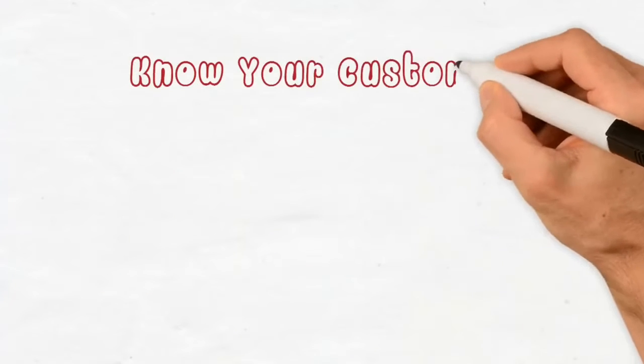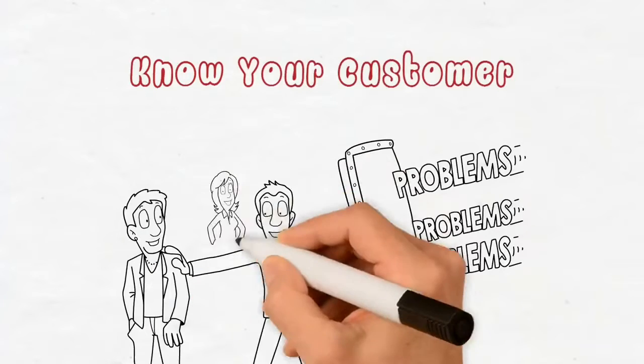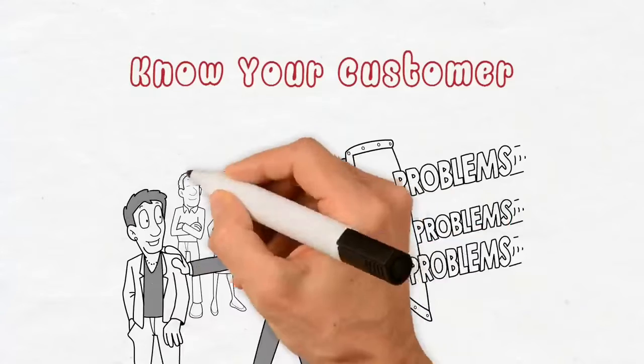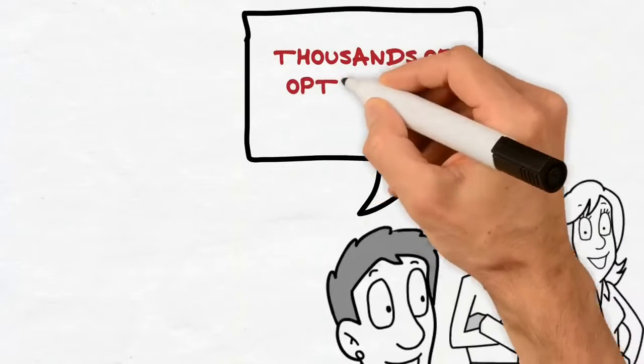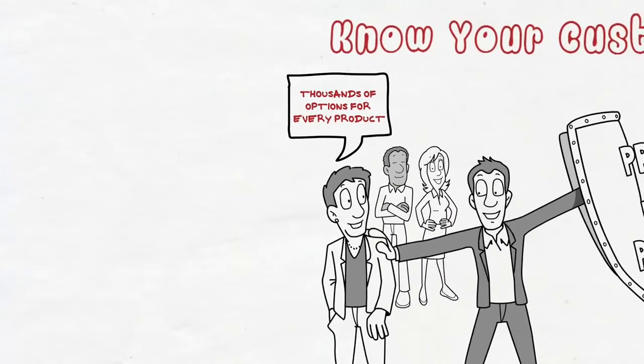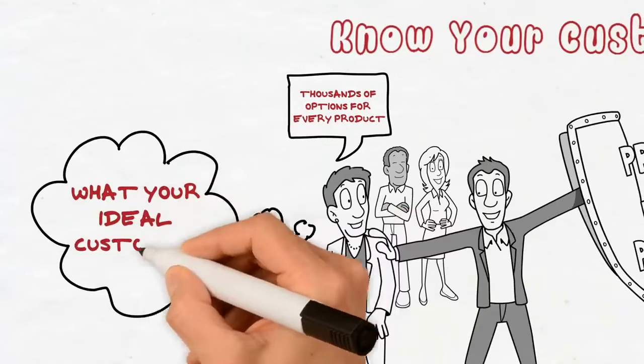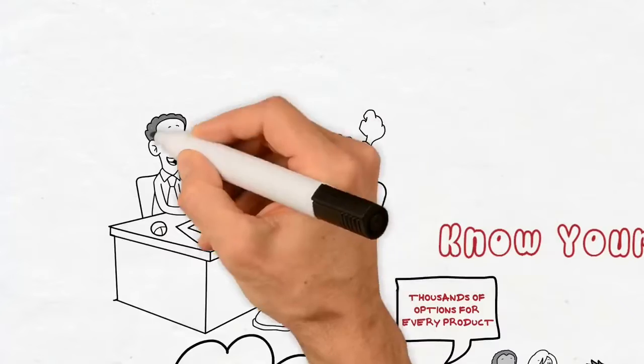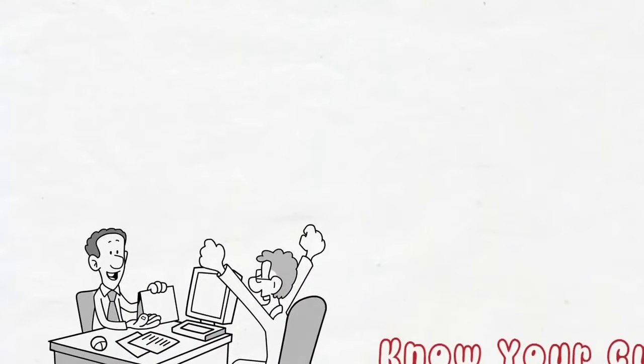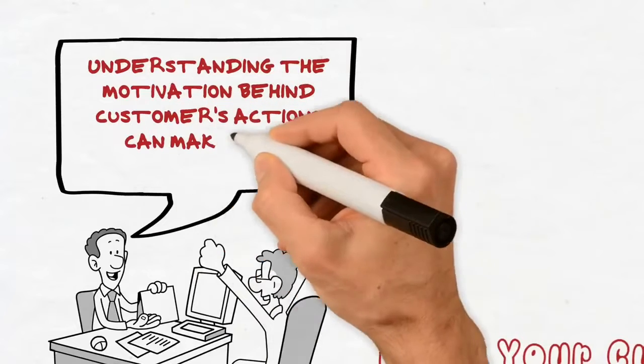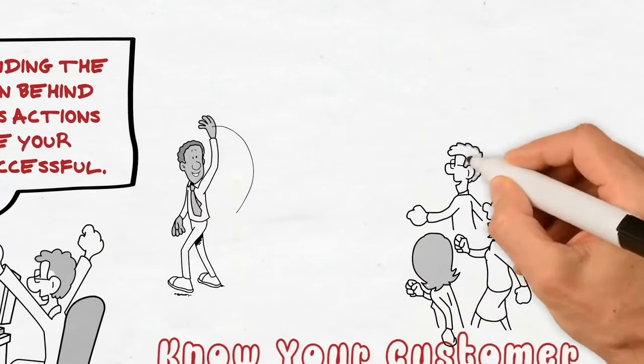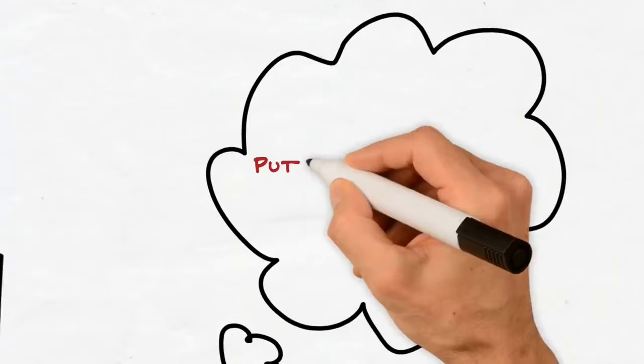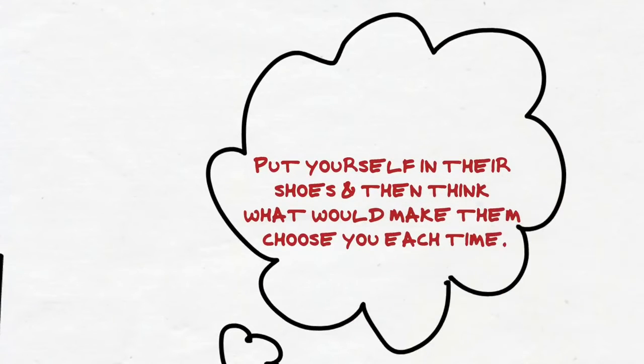Step 5: Know your customer. This goes without saying. Customers are the most important part of any business, and you should know the customers your business caters to. Today, customers are spoiled for choice, and they have thousands of options for every product. So if you want them to buy your product, you should know what your ideal customer wants. This is the reason why you need to define your target populations and research their habits while writing a business plan. Understanding the motivation behind customers' actions can make your business successful. You can focus on the areas that grab your customers' interests and stop wasting energy on the rest. Put yourself in their shoes, and then think what would make them choose you each time. Write down the ideas and implement them.